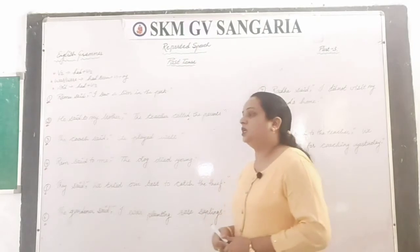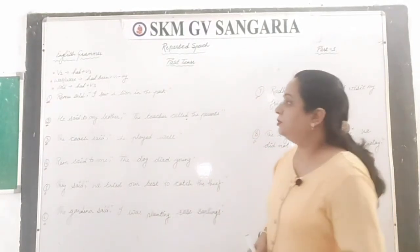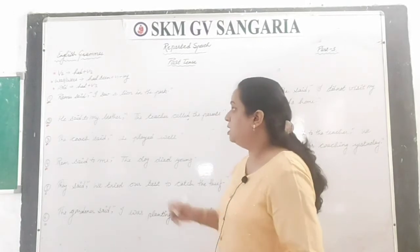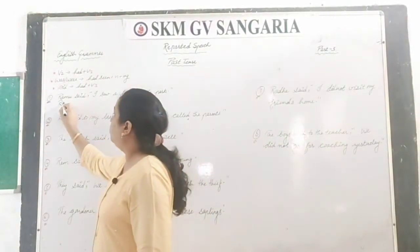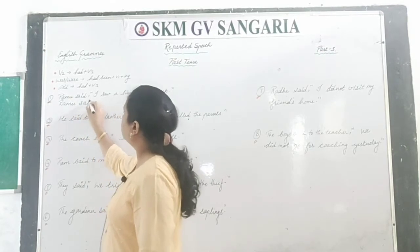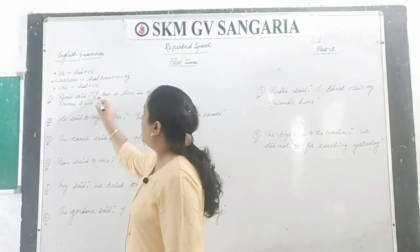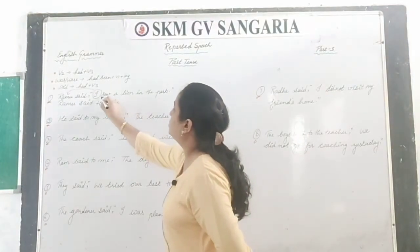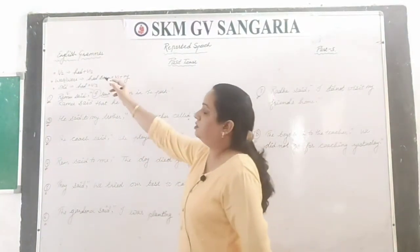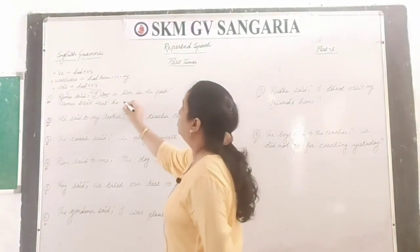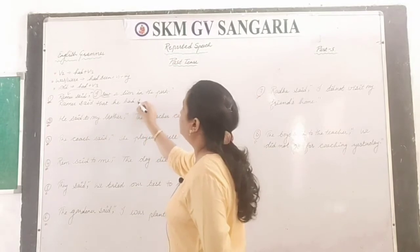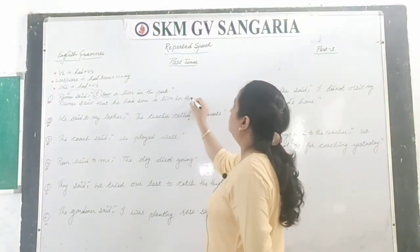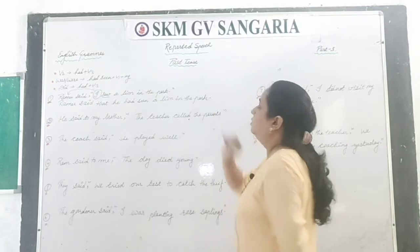Let's see sentence number one in simple form. Ramu said, 'I saw a lion in the park.' So: Ramu said that — this 'I' changes according to Ramu, and the pronoun for this is 'he'. Saw is second form, verb second changes into had plus verb third. So: he had seen a lion in the park.